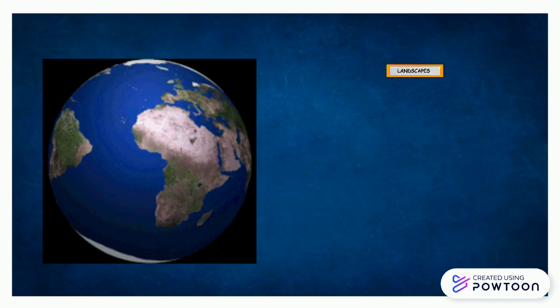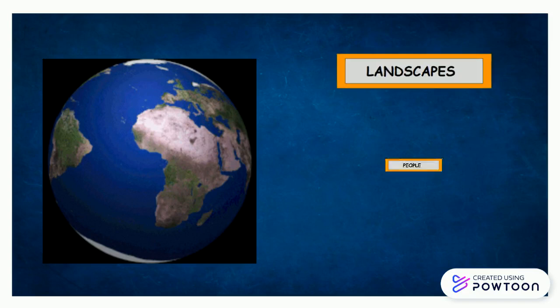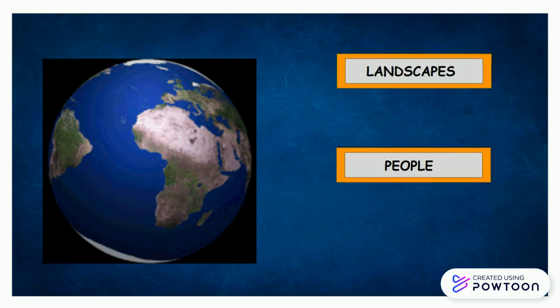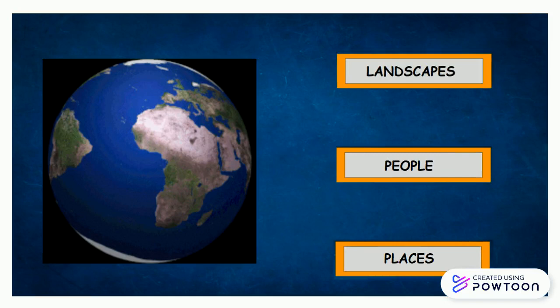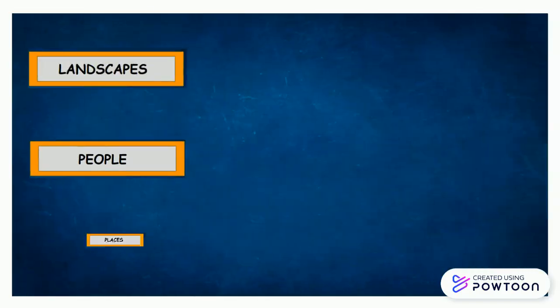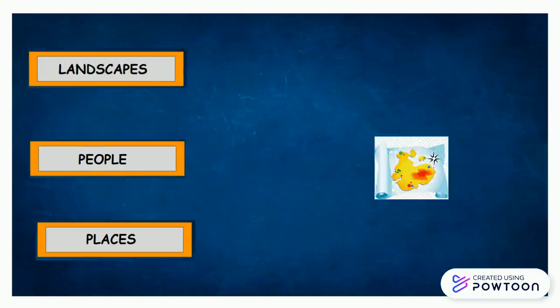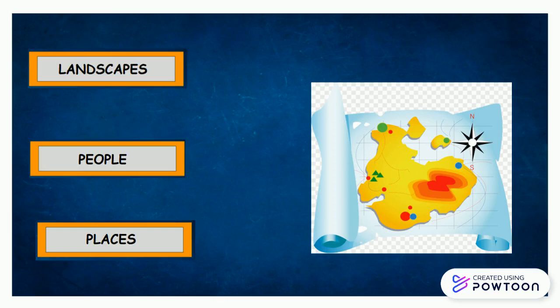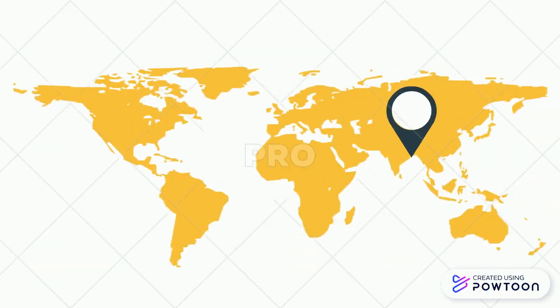Geography is the study of the landscapes, people, and places on the Earth's surface. Whereas maps show the locations of all features on the Earth's surface. A map is a symbolic representation of selected characteristics of a place, usually drawn on a flat surface. Maps present information about the world in a simple, visual way.